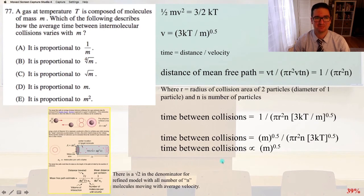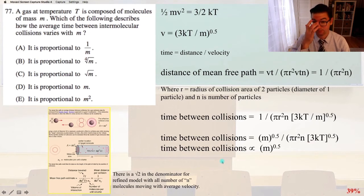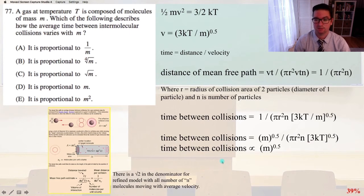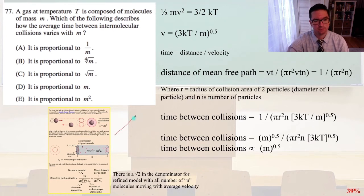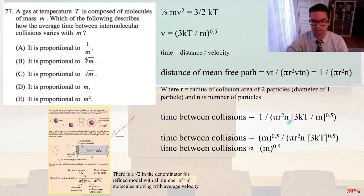Number 77: A gas at temperature T is composed of molecules of mass m. Which of the following describes how the average time between intermolecular collisions varies with m? We know that one-half mv² equals three-halves kT, so velocity equals the square root of 3kT divided by m. Time equals distance divided by velocity. The mean free path equals 1 over (pi r² n), where n is the number of particles and r is the radius of the collision cross-section. So the time between collisions equals 1 divided by pi r² n times the square root of 3kT/m.